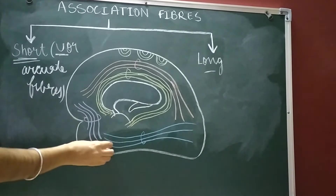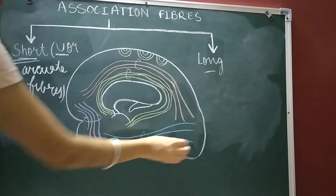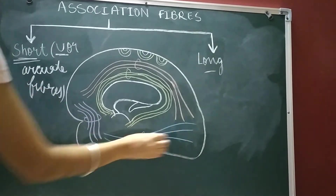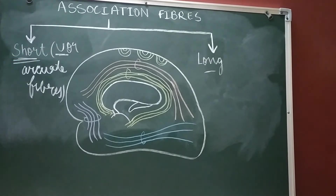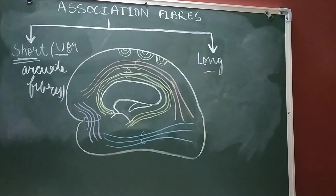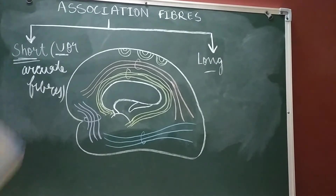For example, the fiber bundle marked in blue is the inferior longitudinal fiber bundle, and you can see it connects the occipital lobe to the temporal lobe. Short association fibers have no further subtypes, but long association fibers are grouped into five categories: uncinate fasciculus, cingulum or the limbic association bundle, superior longitudinal bundle, inferior longitudinal bundle, and the fronto-occipital bundle.